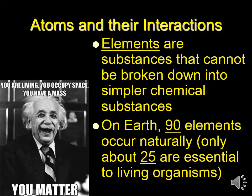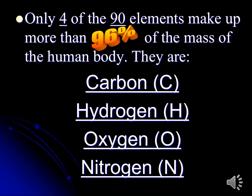Elements are substances that cannot be broken down into simpler substances. On Earth, 90 elements occur naturally. Only about 25 are essential to living organisms. Only four of the 90 elements make up more than 96% of the mass of the human body. They are carbon, hydrogen, oxygen, and nitrogen.